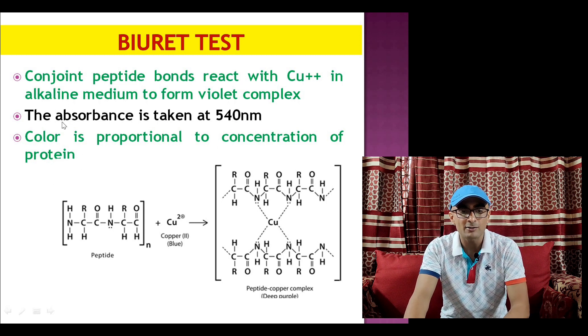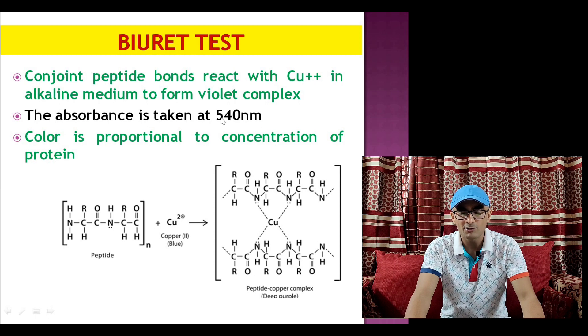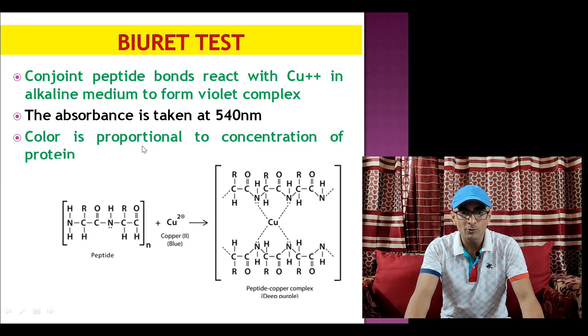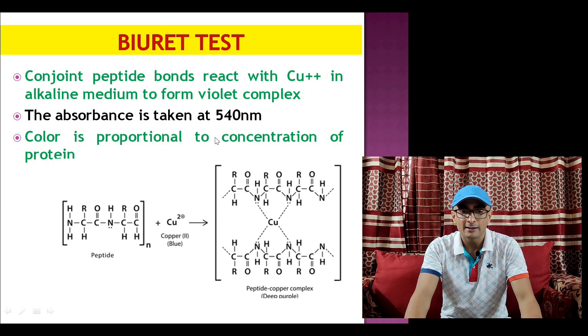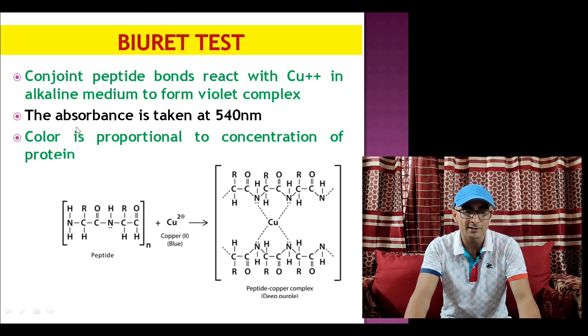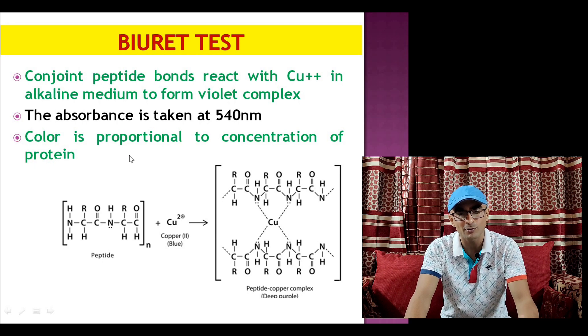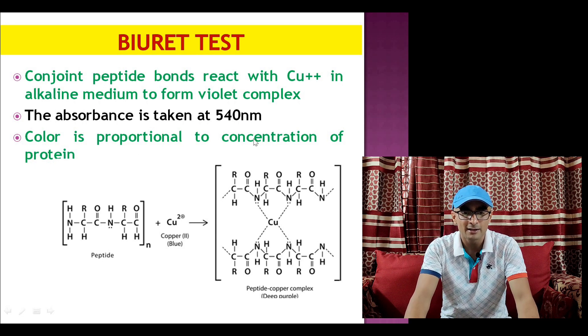The color is measured by taking absorbance using a colorimeter at 540 nanometer, and because the amount of color is proportional to concentration of protein, from the concentration of color, amount of protein is calculated using this method.